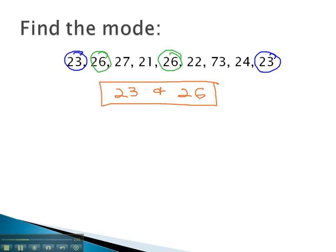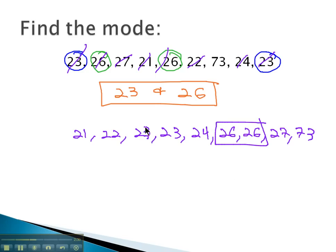If we weren't sure about finding these values, we could have put the numbers in order: 21, 22, and then there's a couple 23's, 24, 26 is there twice, 27, and 73. And then it would have been more obvious that 26 and 23 are repeated values.